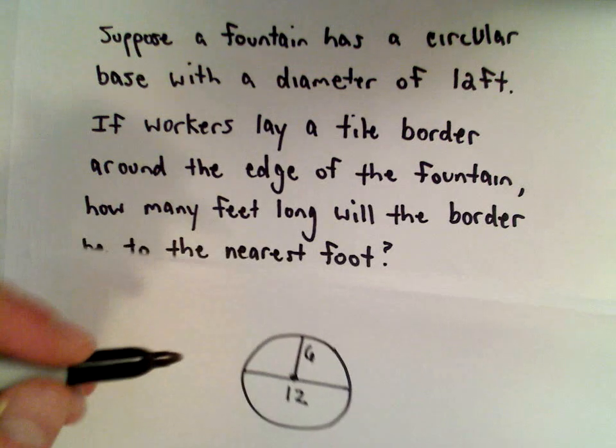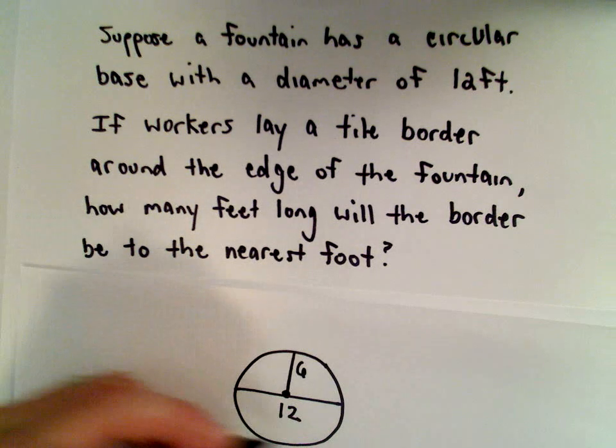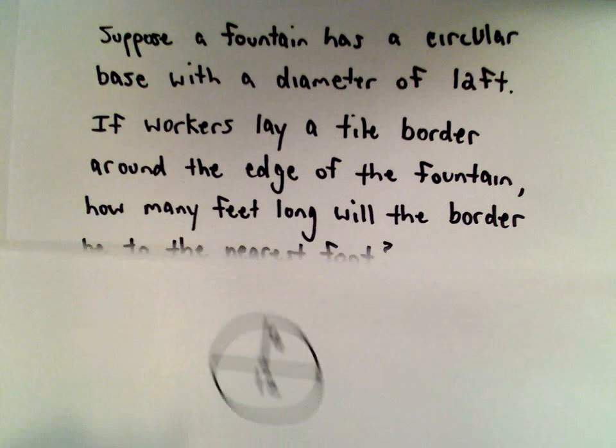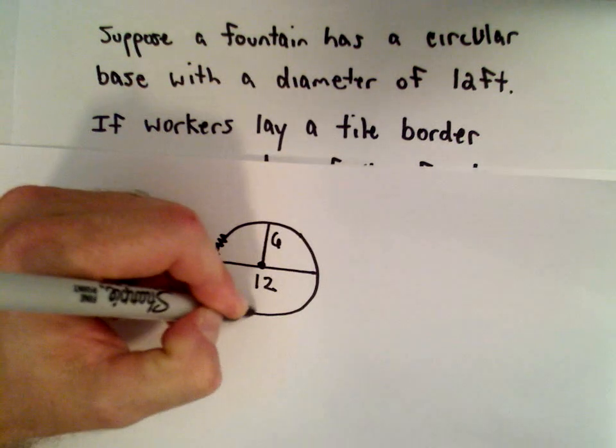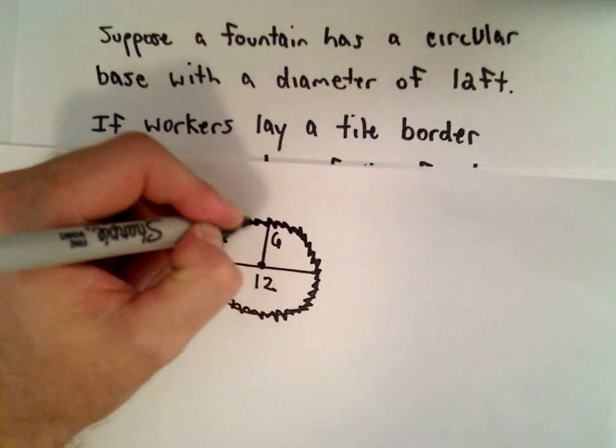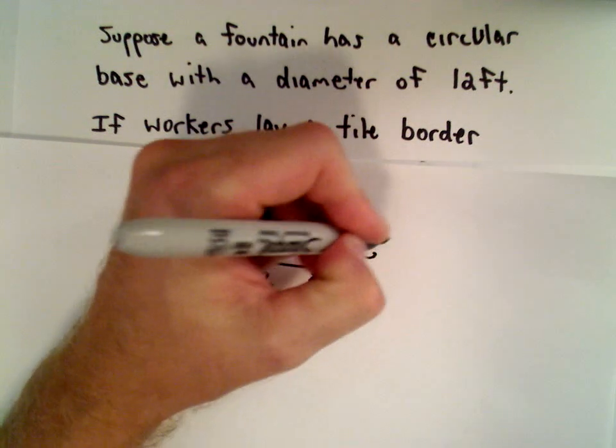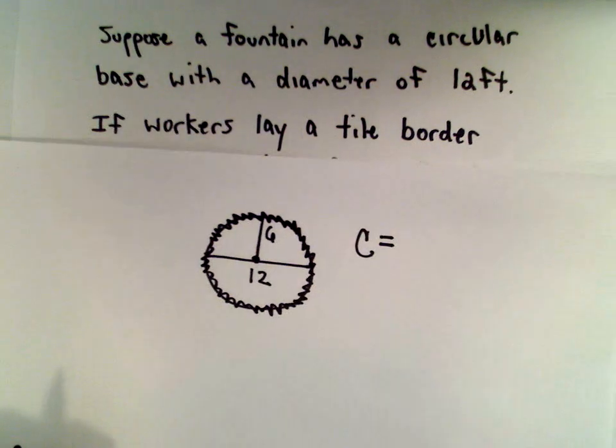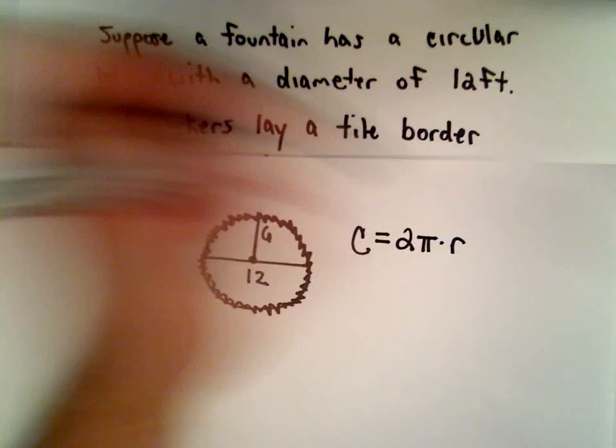Okay, so they're going to make this border around the edge here. So what we need to do is we need to find this length around the circle. So what we're really finding is the circumference. The circumference formula for a circle is going to be 2 times pi times the radius.